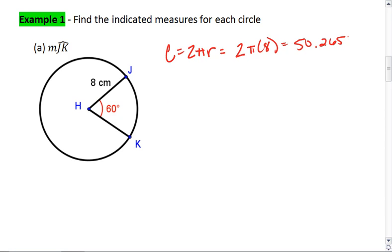Now I'm going to set up a ratio. I know that I have 60 degrees out of a total 360. This equals the length of my arc JK over the total possible circumference of my circle, which is 50.265 centimeters.